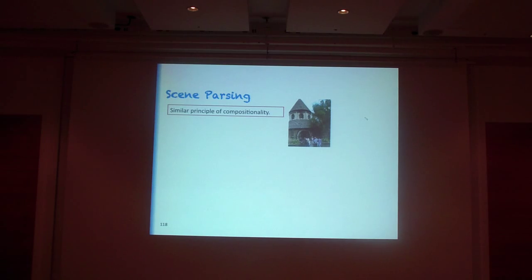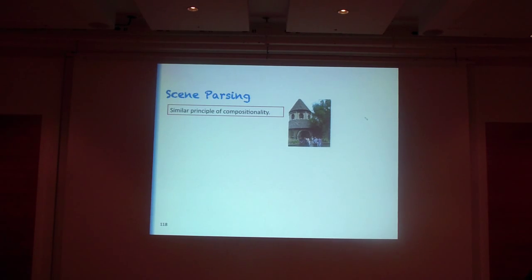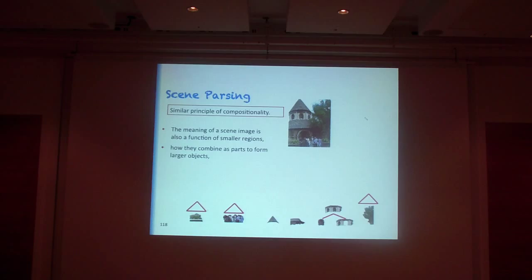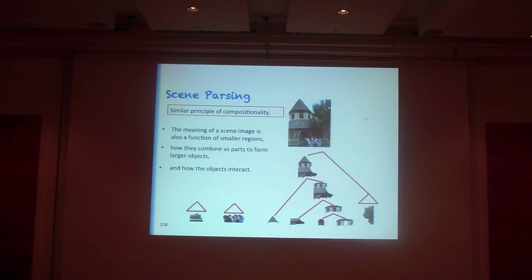Just a quick interesting side note. In our IСML paper, we also looked at scene parsing in images. The reason was that we feel there's a similar principle of compositionality going on here, where the meaning of a scene image is also a function of smaller regions and how they're combined as parts to form larger objects.